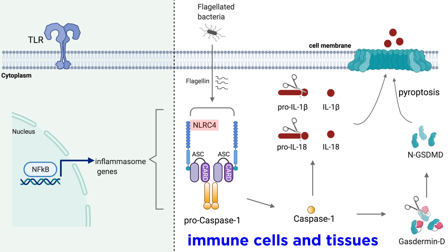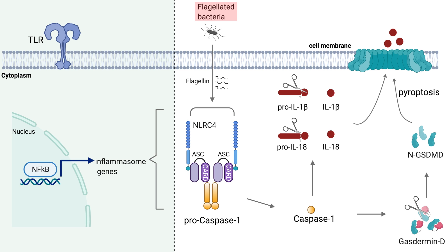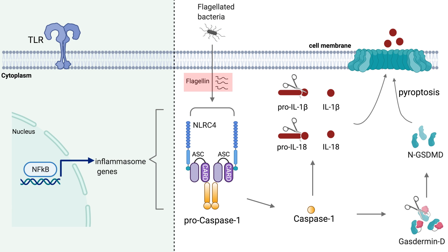NLRC4 is another inflammasome that is primarily expressed in immune cells and tissues. Unlike the other NLRPs, NLRC4 contains an endogenous CARD domain, meaning that it can directly bind Procaspase-1. NLRC4 is involved in sensing several different bacterial infections, including Salmonella, Legionella, Shigella, and Pseudomonas. NLRC4 has been shown to be activated in response to flagellin, the protein that makes up bacterial flagella.